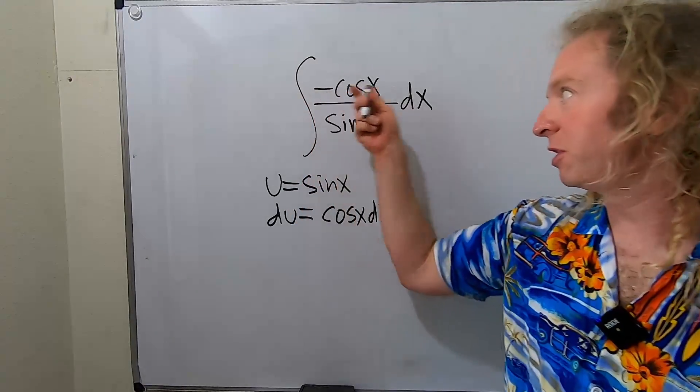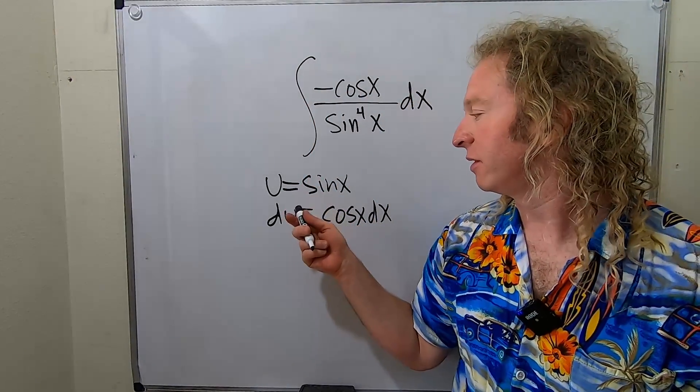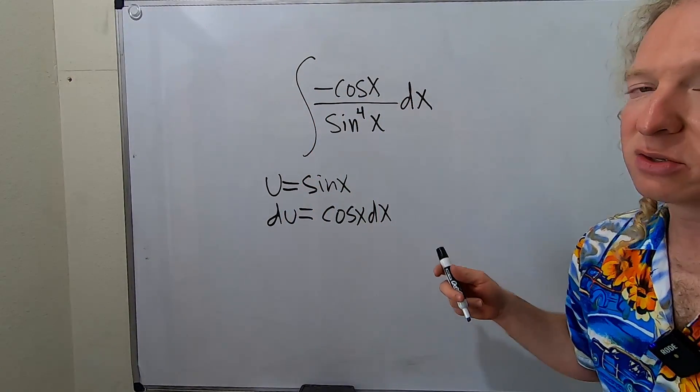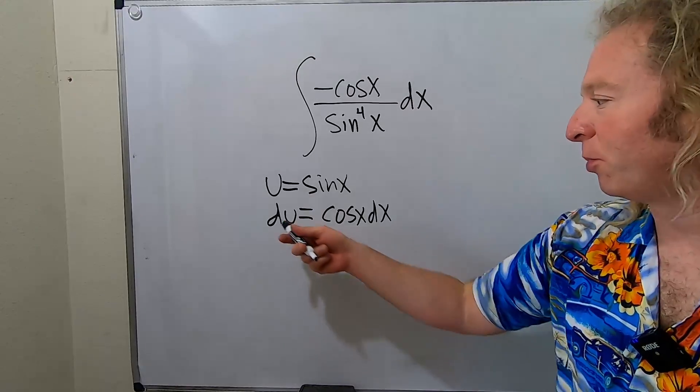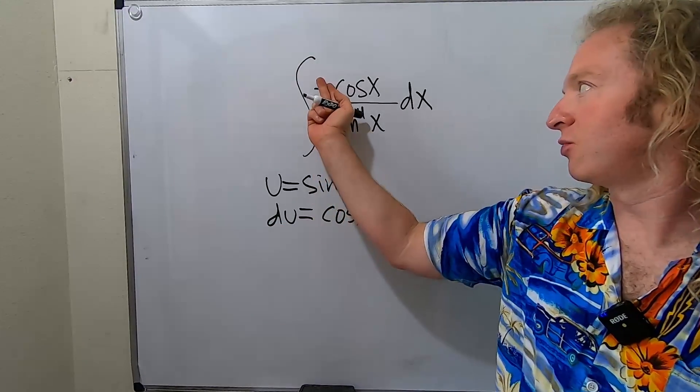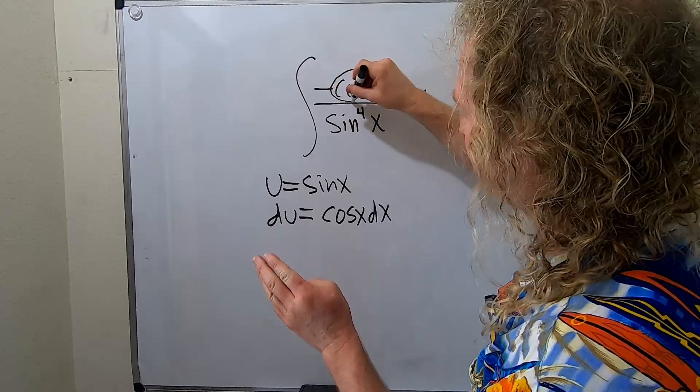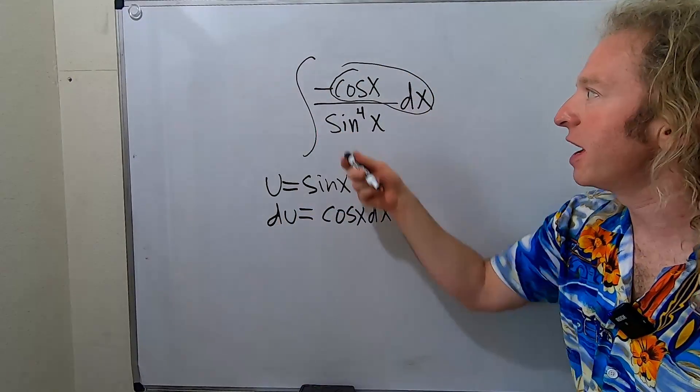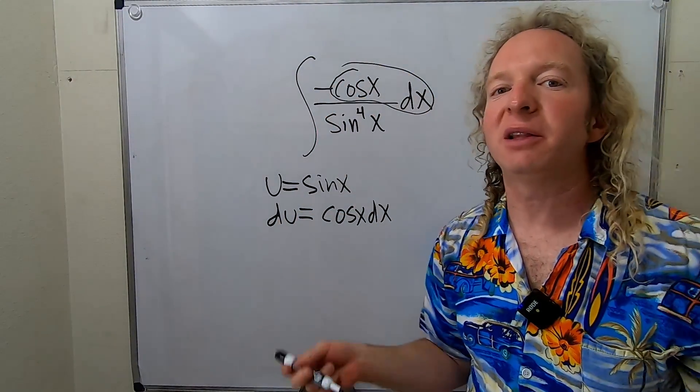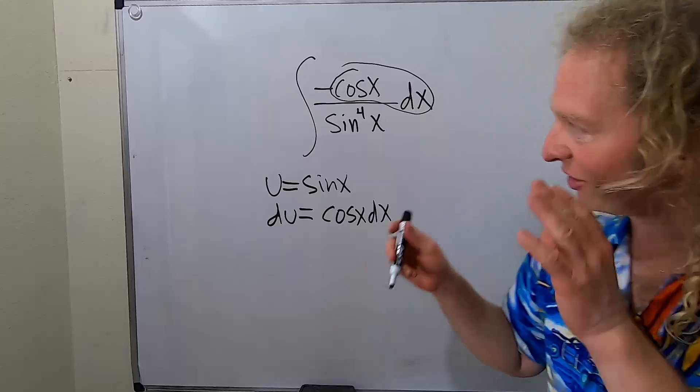And this is good, because this is pretty much what we have here. The only thing that's missing is the negative sign. So we have a couple choices. We can multiply both sides by negative 1, or we can just ignore the negative sign and just replace all of this with du, and the negative will just hang out. I'm all about letting that negative sign just hang out. So let's just leave it there.